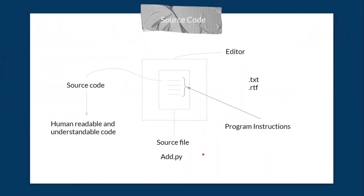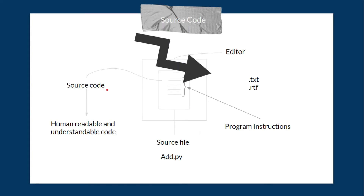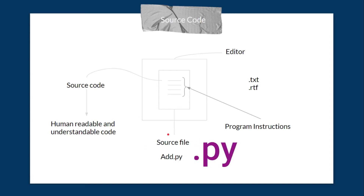In the last lecture, we saw that in the editor we write code. This code is known as source code, which consists of program instructions. These instructions are highly human readable and understandable. The file in which we write source code is known as a source file, and in Python the source file is saved with the extension dot py.